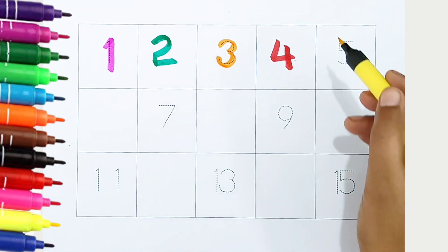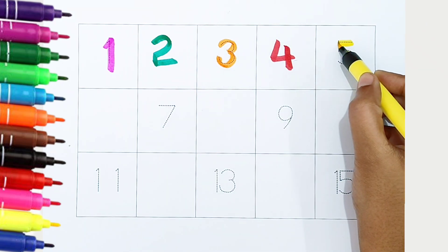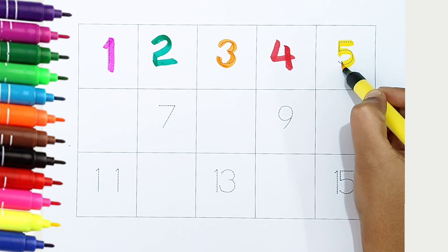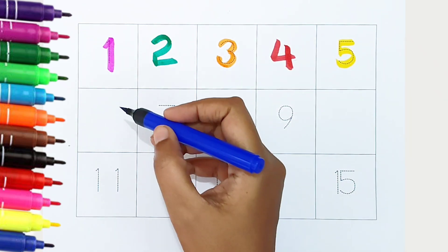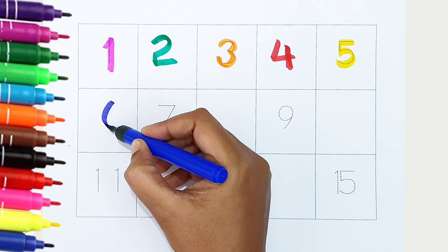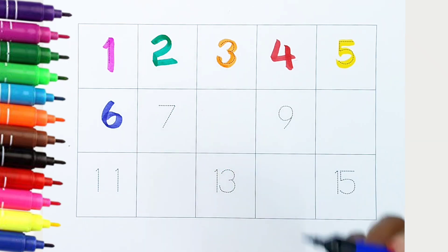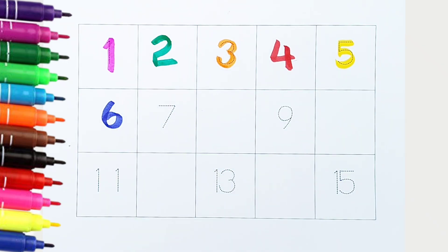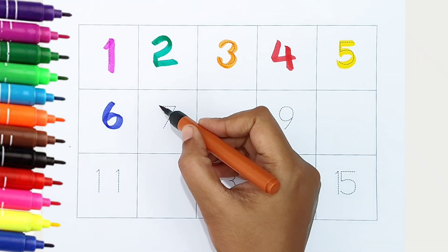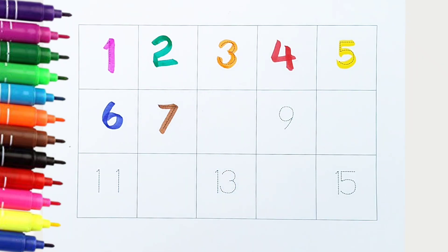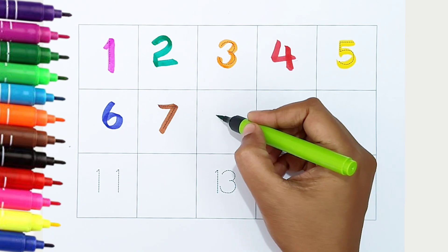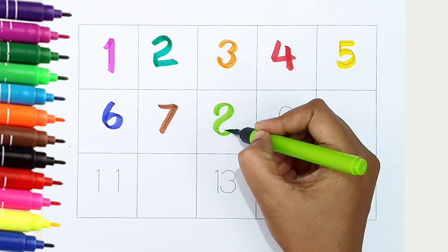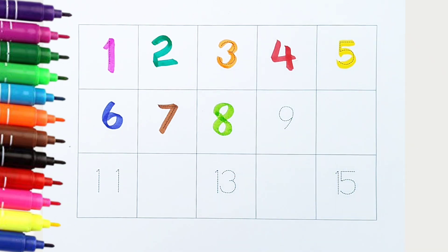Five, yellow color. Six, dark blue color. Seven, brown color. Eight, light green color.